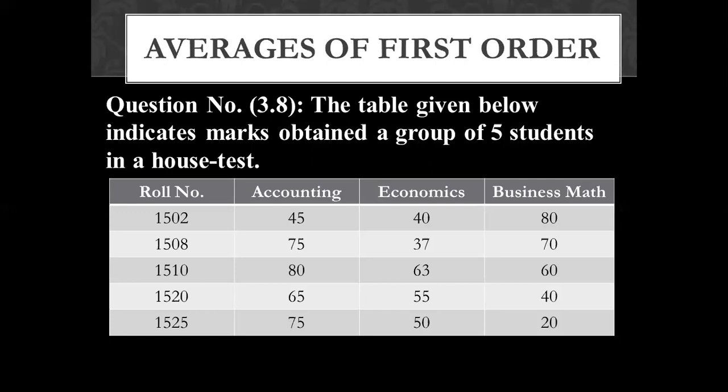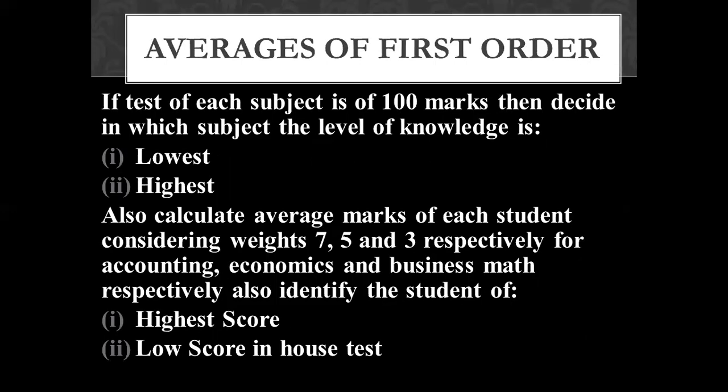We have a group of five students in a house test. In the house test, there are five students' marks in three subjects: accounting, economics, and business math. We have to find the lowest score and the highest score — that means which subject has the highest or lowest level of knowledge.